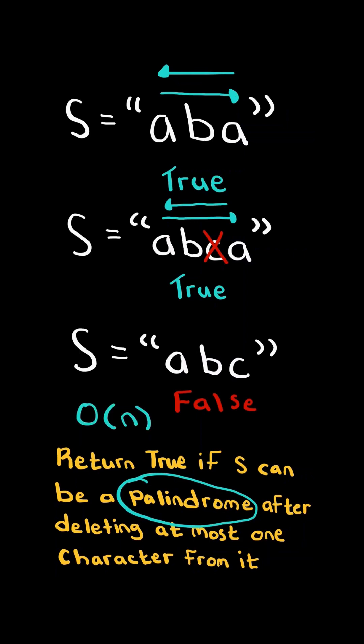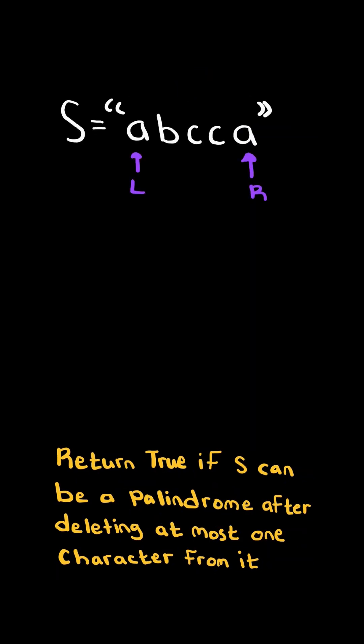We will solve this in O of n time. Consider this new example. We will have two pointers, left and right, at the start and end of the string. If the characters at the pointers are equal, then we advance the L pointer and decrement the R pointer.